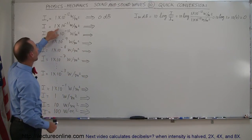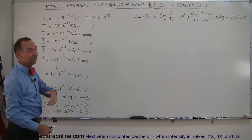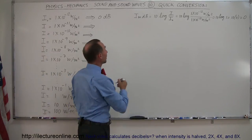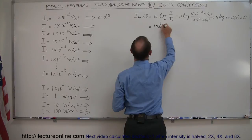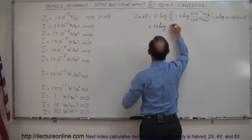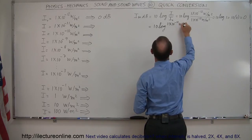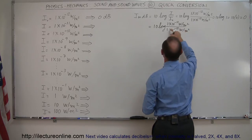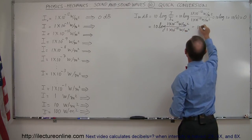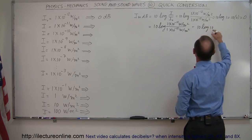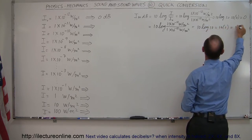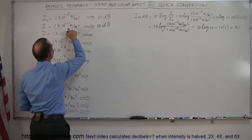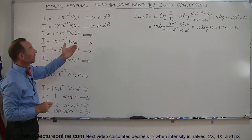If we now hear a sound that's 10 times as loud — 10⁻¹¹ W/m², which is 10 times as big as 10⁻¹² — we apply the same equation: 10×log(1×10⁻¹¹ / 1×10⁻¹²). That gives 10×log(10), and since log(10) = 1, that's 10×1 = 10. So this is equal to 10 decibels. A sound 10 times louder than the threshold of sound is 10 decibels.